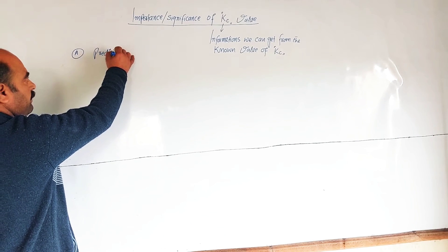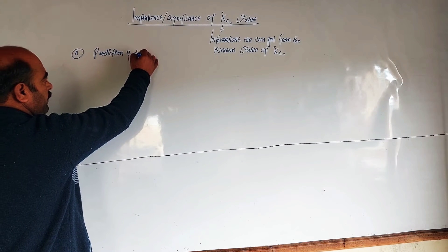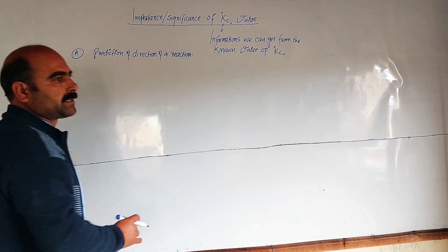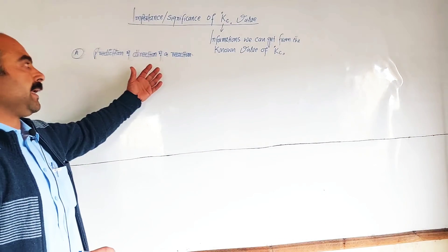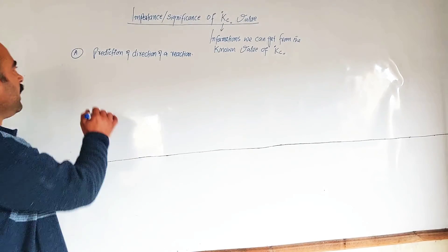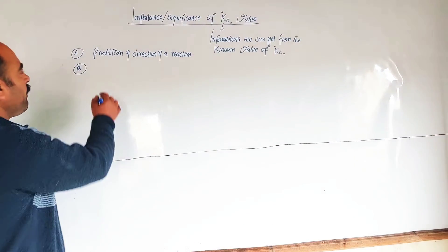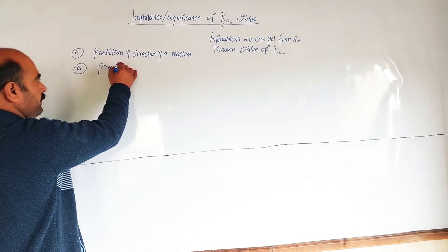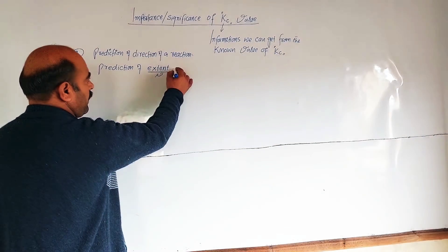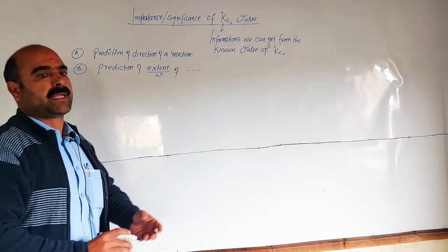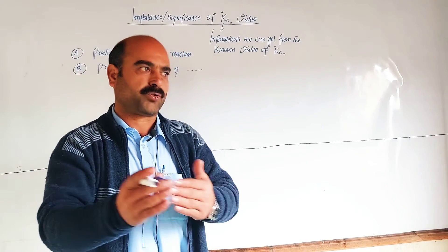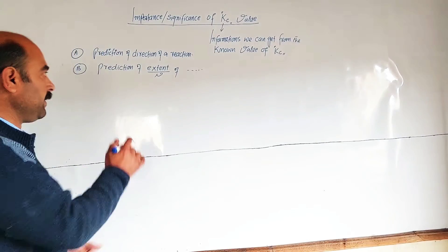Prediction of direction of a reaction: From the known value of Kc, we can find out which direction the chemical reaction is proceeding — whether forward or reverse. We can also predict the extent of a chemical reaction.